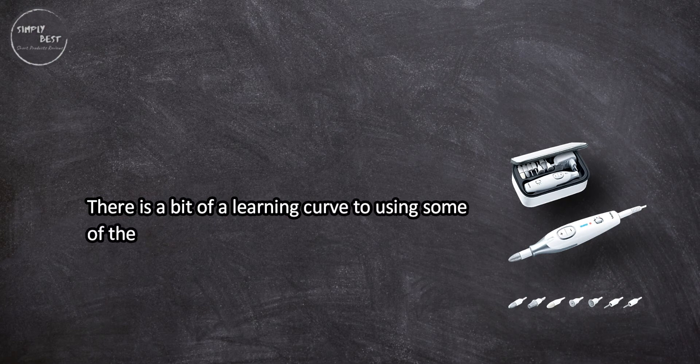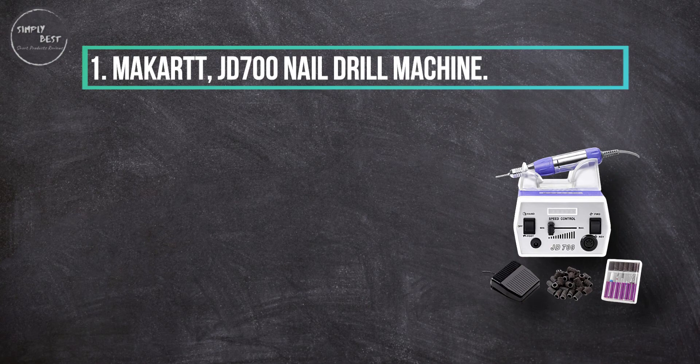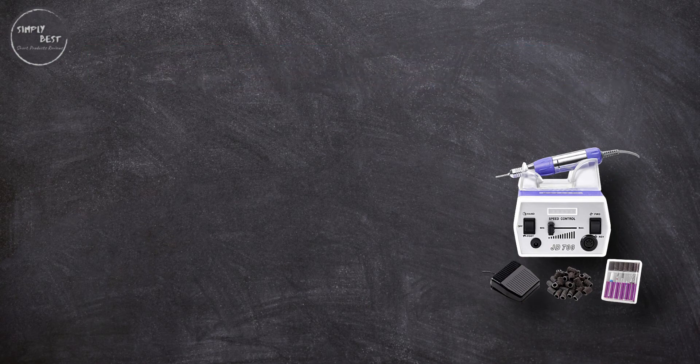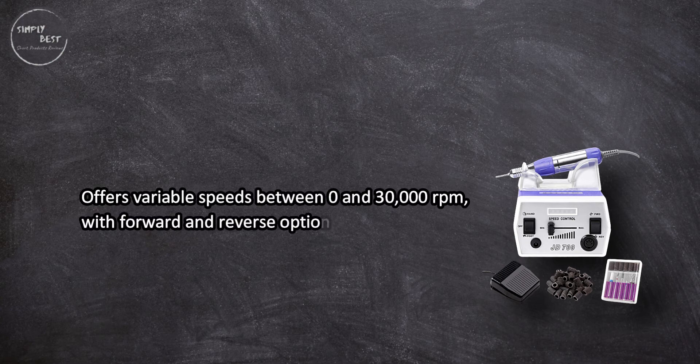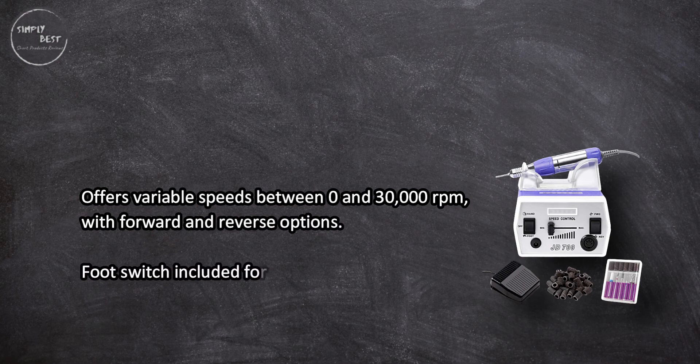At number one, the McCart JD 700 Nail Drill Machine offers variable speeds between 0 and 30,000 revolutions per minute with forward and reverse options. A foot switch is included for hands-free control.